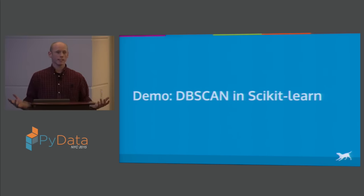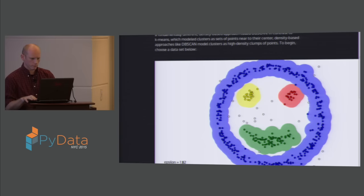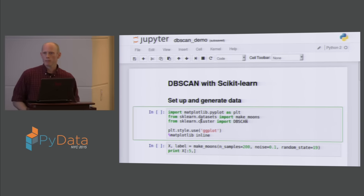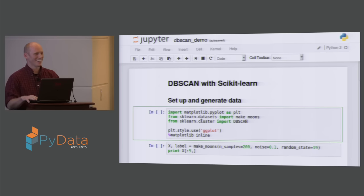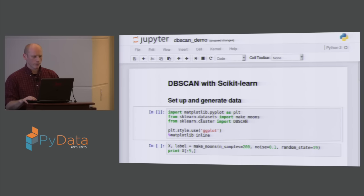Now I want to show how to do DBSCAN in scikit-learn — I'm going to go to a Jupyter notebook. We're going to import our libraries: matplotlib so I can show what's happening, the make_moons function from scikit-learn to generate this data, and the DBSCAN function from scikit-learn. We'll use the ggplot style in matplotlib, because it's awesome. Here's just the top five rows of our data — we've got an n by 2 matrix.